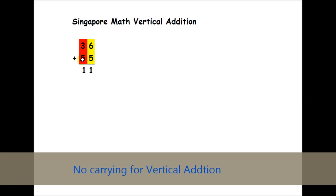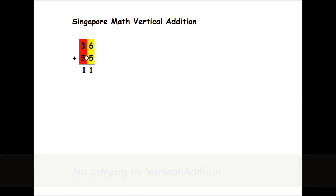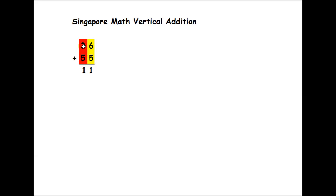So now we move to the next one, 3 plus 5. Well, it's actually not really 3 plus 5. It's 30 plus 50. And what you could do is, in the beginning, just to familiarize yourself with what's actually going on with the numbers, you could write it on the side what you're actually adding.